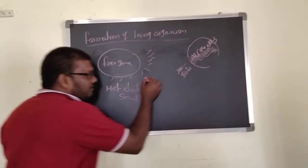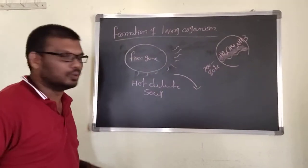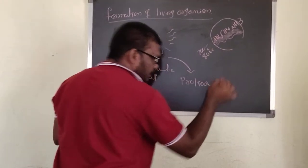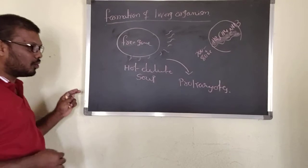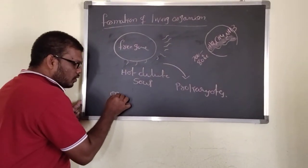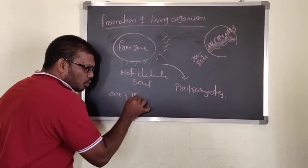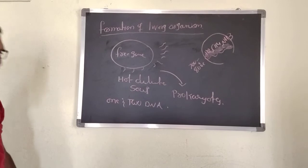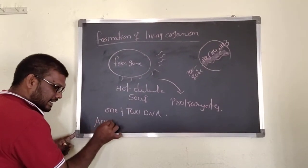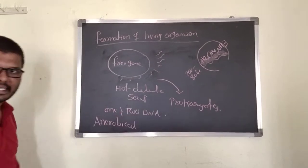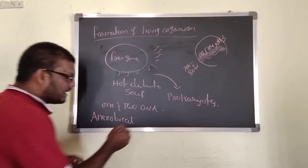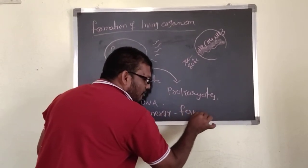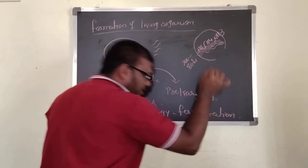And then it turns to prokaryotes. These early prokaryotes have DNA present. The first formed ones are anaerobic in nature — they gain energy by the process of fermentation.